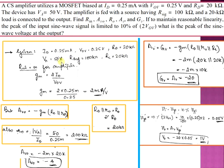Given: ID, VOV, RD, VA, R_signal, RL. In the CS amplifier without source resistance, Rin is infinite. GM = 2×ID / VOV = 2 × 0.25 mA / 0.25 = 2 mA/V. AV0 = −GM × RD, and since RD ∥ r0 = R0 = 20 kΩ, we compute r0 = VA / ID = 50 / 0.25 mA = 200 kΩ. AV0 = −GM × RD = −2 × 20k = −40.